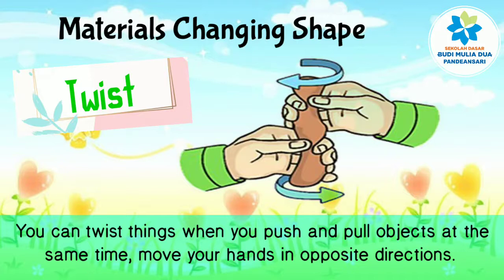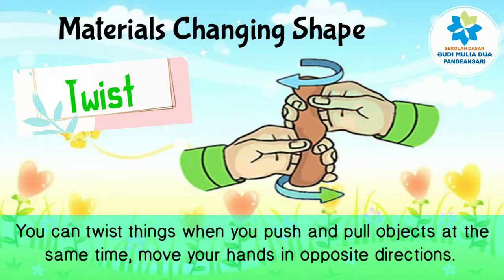Twist. You can twist things when you push and pull objects at the same time, moving your hands in opposite directions. Kita dapat memutar benda dengan cara menekan dan mendorong objek tersebut dalam waktu yang bersamaan — gunakan tanganmu di sisi yang berbeda, yang satu memutar ke kanan, yang satu memutar ke kiri.